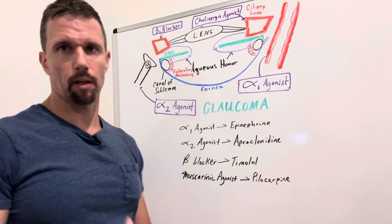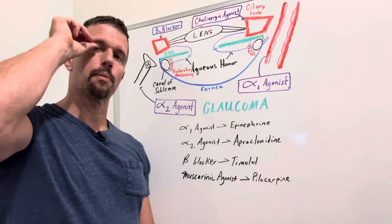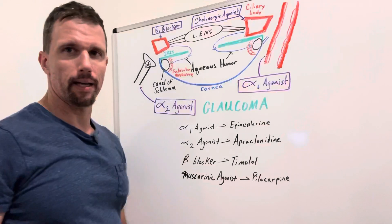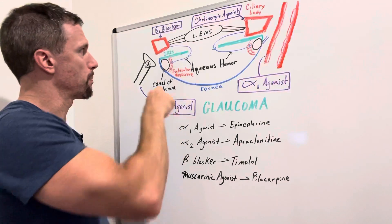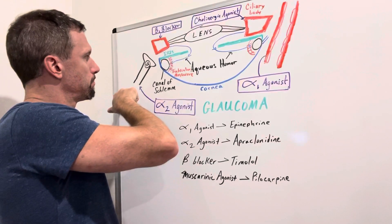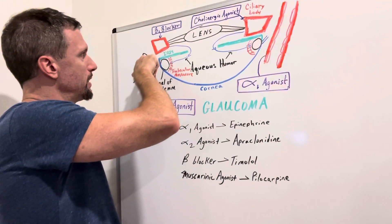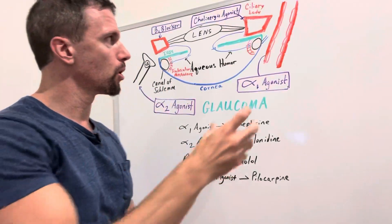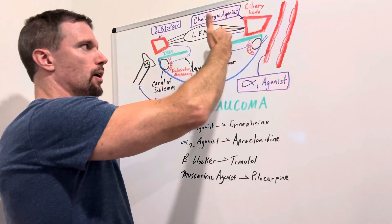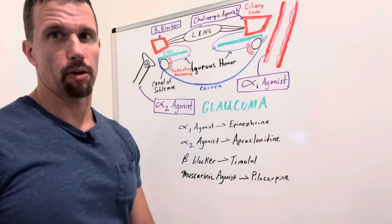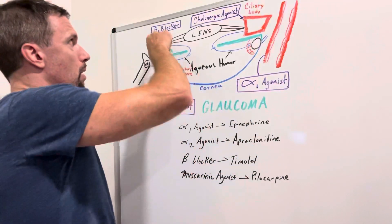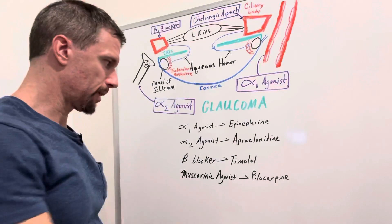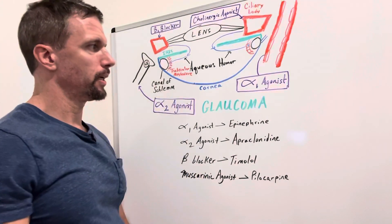So remember with the suffix LOL, that's a beta blocker. So Timolol is eye drops. You drop them in and beta-1 receptors are on the ciliary body. And when they get stimulated by norepinephrine, so here's norepinephrine being released from this sympathetic neuron, it's going to bind to that beta-1 receptor. That's going to stimulate more production of aqueous humor. So if you can block the production of aqueous humor by blocking the beta-1 receptor where norepinephrine can't bind to it, you're going to decrease the intraocular pressure. And that's how beta blockers work in glaucoma.